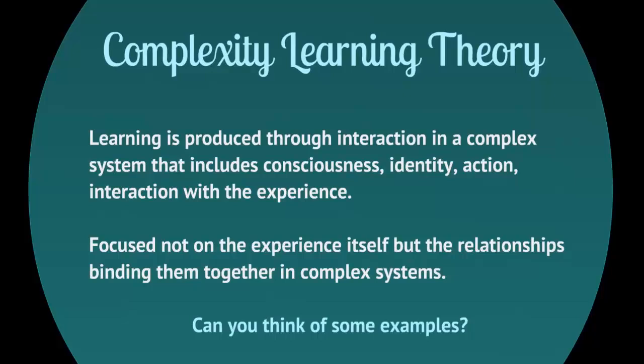Complexity learning theory proposes that learning is produced through interaction with a very complex system. This is highly applicable to adult learning, particularly in an online environment where each learner sits in a very different space. The complexity involves your consciousness — are you present? Your identity — do you see yourself as a digital learner? What action are you taking, and how are you interacting with the experience? It's focused not on the learning experience itself, but on the relationships that keep everything going. Examples include a school or work team with complex motivations, or a classroom with 30 students with different learning needs.